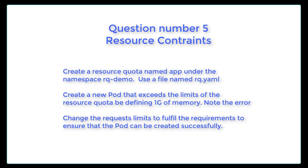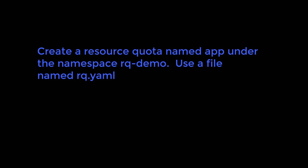Create a resource quota named app under the namespace rq-demo. Use a file named rq.yaml. Create a new pod that exceeds the limits of the resource quota by defining one gig of memory. Note the error. Change request limits to the field requirements to ensure that the pod can be created successfully.